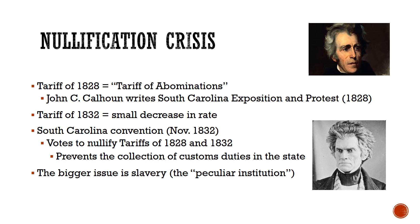In 1828, John C. Calhoun — pictured at the bottom of the screen — was Andrew Jackson's vice president and he's from South Carolina. In his South Carolina Exposition and Protest, he explains why this tariff is so bad. South Carolinians are going to argue that the tariff is so unfair that it's unconstitutional. The other important thing about Calhoun's Exposition and Protest is that he resurrects the idea of nullification, but nothing really comes of it.